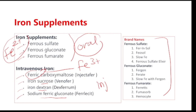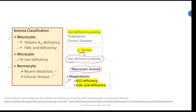We need to remember which products are given orally and which are given IV or by injection. There are three types of anemia according to the size of red blood cells. Macrocytic anemia is related to deficiency of B12 or folic acid. Microcytic anemia, with small red blood cells, is mainly associated with iron deficiency. Normocytic anemia is associated with chronic disease or recent blood loss.